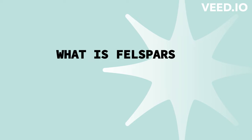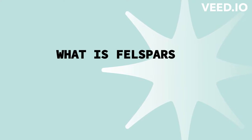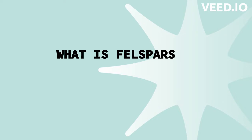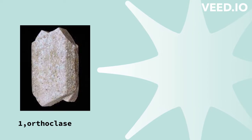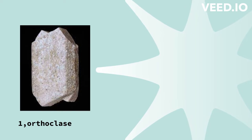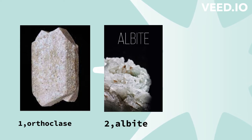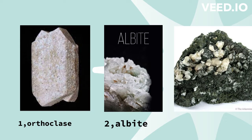In today's lesson we are going to learn more about plagioclase feldspars. The feldspars are the most common minerals in the Earth's crust. They consist of three end-members: a potassium-rich end-member called orthoclase, a sodium end-member called albite, and a calcium-rich end-member called anorthite.